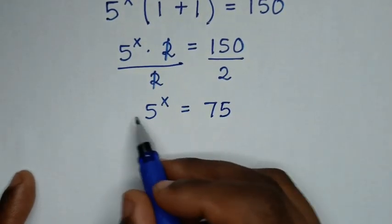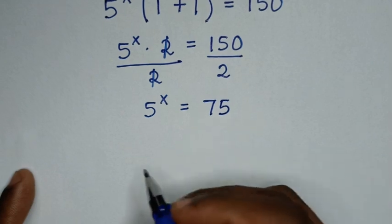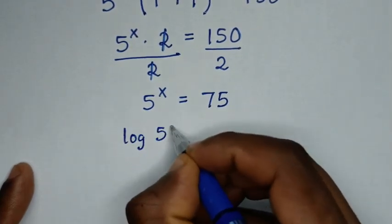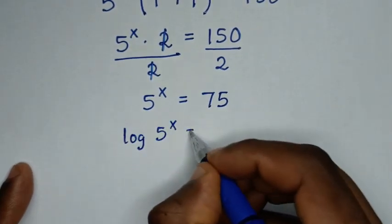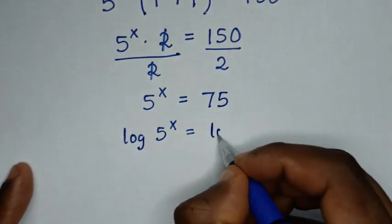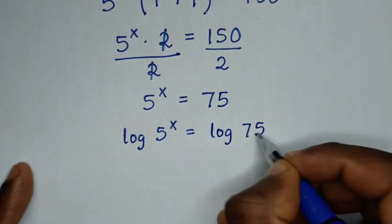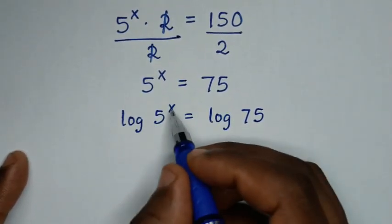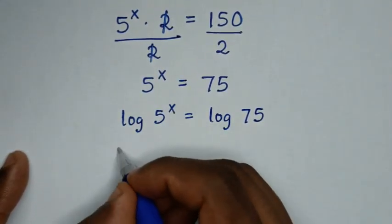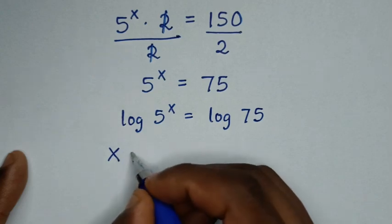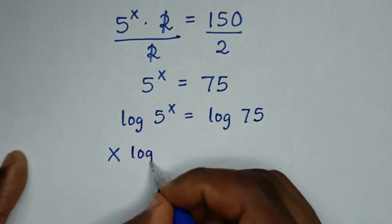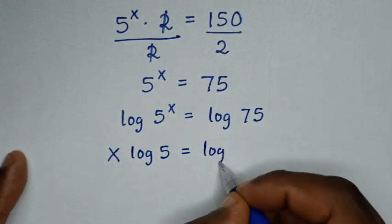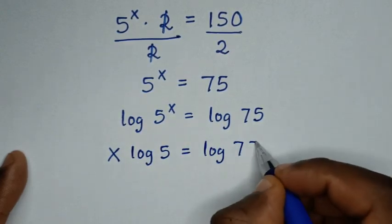Then we'll apply log on both sides, so it will be log of 5 power x is equal to log of 75. Then this power x will move to the front, so it will be x times log of 5 is equal to log of 75.